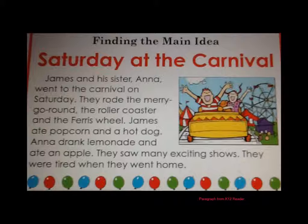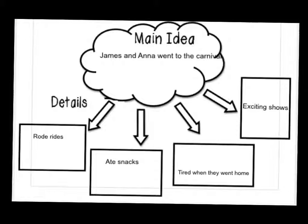Saturday at the carnival. James and his sister Anna went to the carnival on Saturday. They rode the merry-go-round, the roller coaster, and the Ferris wheel. James ate popcorn and a hot dog. Anna drank lemonade and ate an apple. They saw many exciting shows. They were tired when they went home. The main idea is that James and Anna went to the carnival.